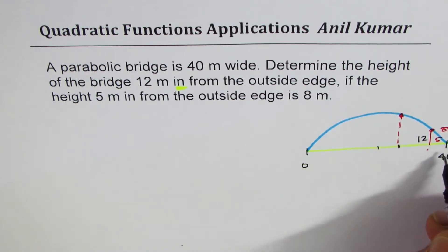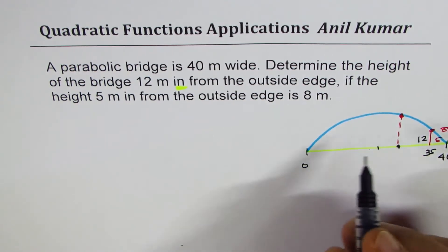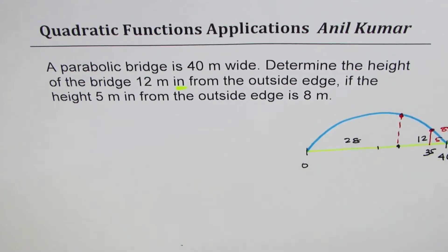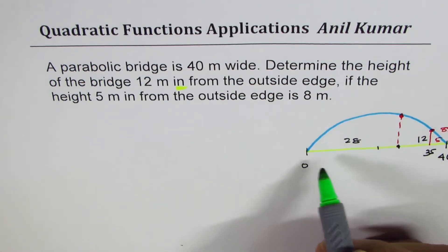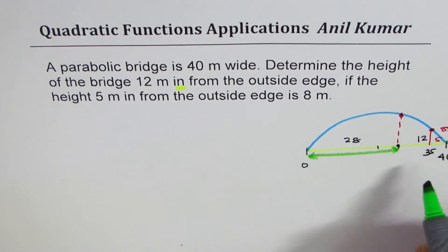If it is 5 from the edge then it is 35 from 0. If it is 12 from the edge, then how much is this? 40 take away 12, which is 28. So this portion is 28. That is what is important to understand.